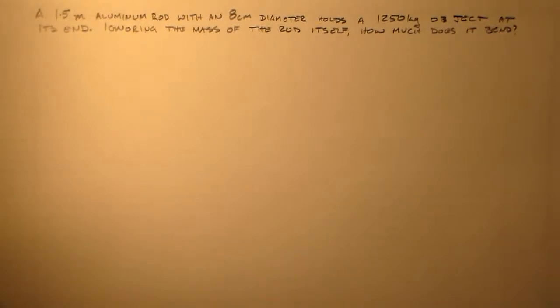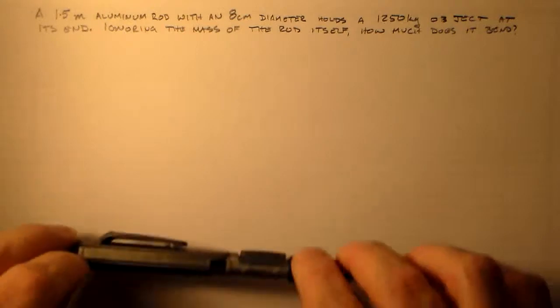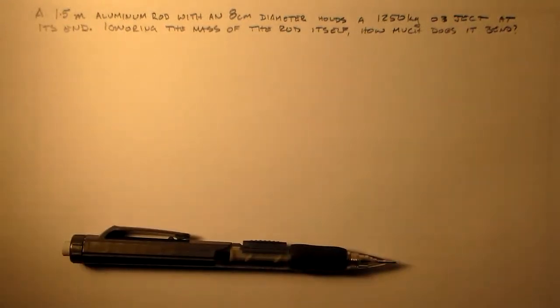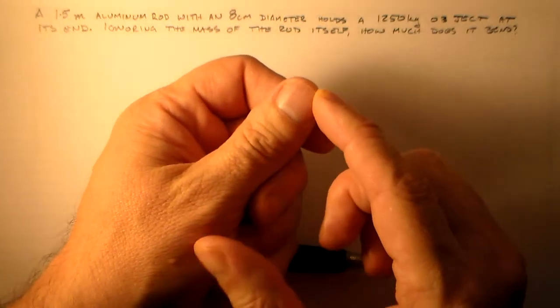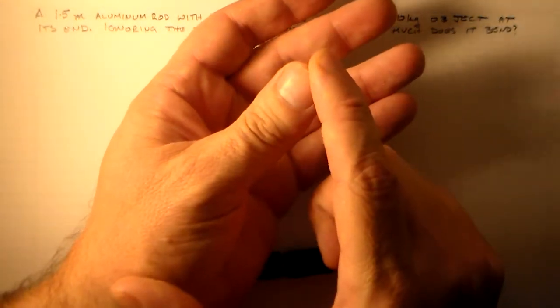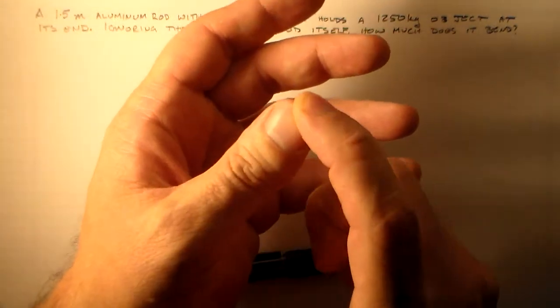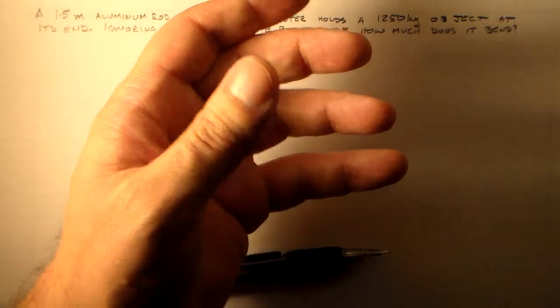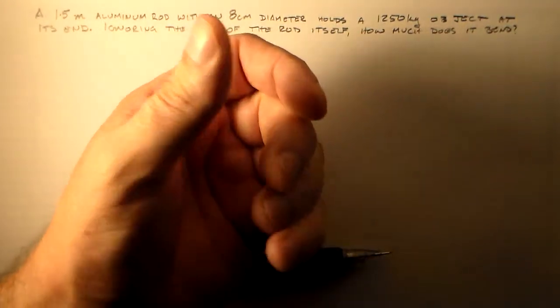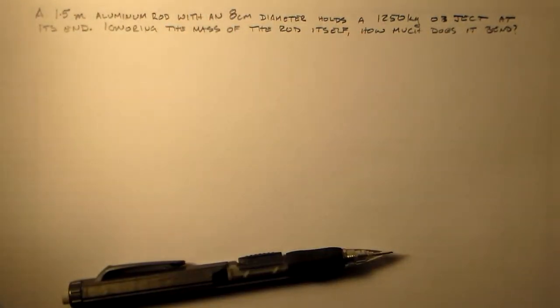Okay, so I'd like to look at this problem. I'd like to look at a problem here with a 1.5 meter rod, and it has an 8 centimeter diameter. Alright, 8 centimeters is about so large, almost the size of my thumb from this joint here to the end of my thumbs. That's one, two, three joints up there.